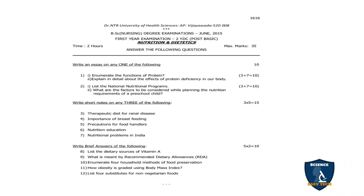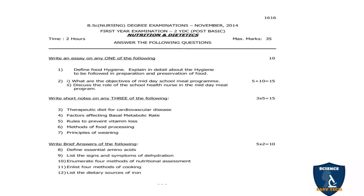Moving on to November 2014 question paper. First question: Describe food hygiene and explain in detail about hygiene to be followed in preparation and preservation of food — 10 marks. Second question 2A: What are the objectives of the midday meal program? — 5 marks. 2B: Discuss the role of school health nurse in the midday meal program — 10 marks. 5 + 10 = 15 marks. Short notes (any 3 of 5): therapeutic diet for cardiovascular diseases; factors affecting basal metabolic rate; rules to prevent vitamin loss; methods of food processing; principles of weaning. Two-mark questions: define essential amino acids; list signs and symptoms of dehydration; enumerate 4 methods of nutritional assessment; enumerate 4 methods of cooking; list the dietary sources of iron.